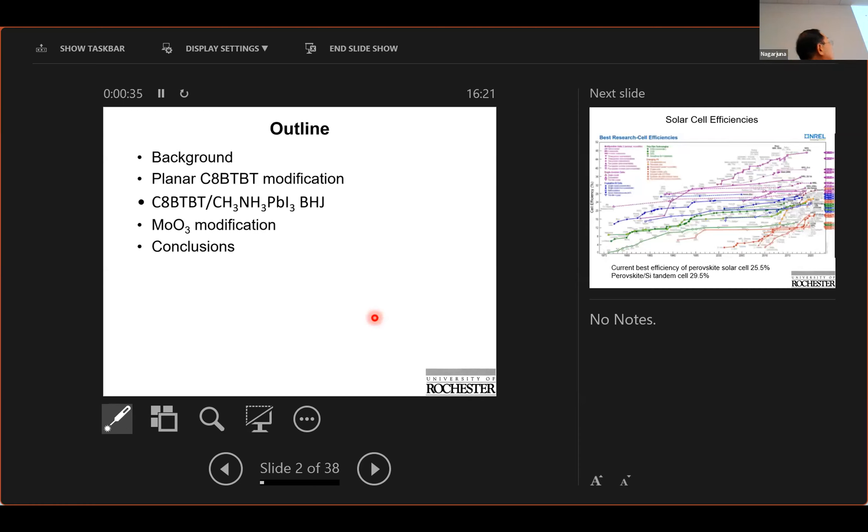The motivation and then I will give example of using perovskite CABTBT to modify the photodetector and then also bulk heterojunction of the same material and molybdenum oxide.